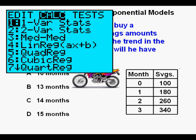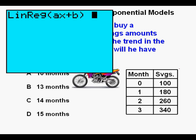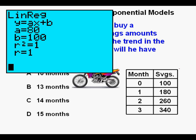We're prepared to run a regression by going to STAT, then CALC. We arrow down to 4, linear regression. Press ENTER. Press ENTER again. Our function is Y equals 80X plus 100.